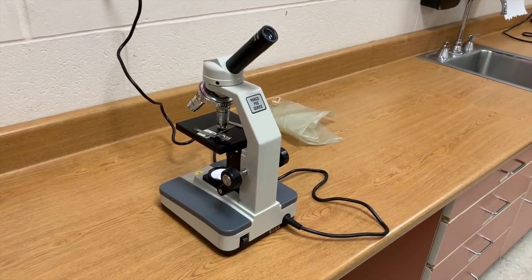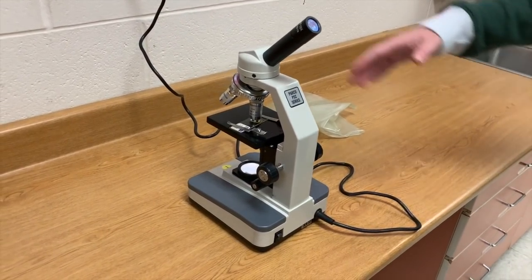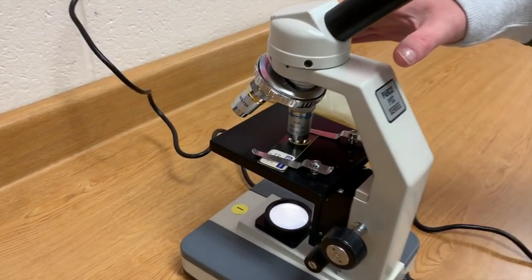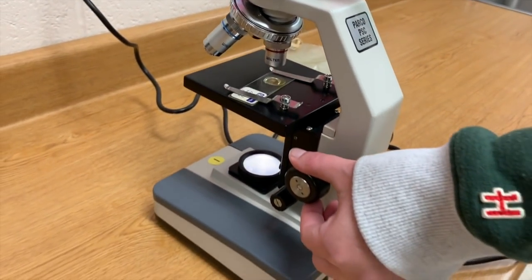After you have viewed your specimen on high power, we're going to clean up the microscope. First thing we need to do is move our objective to low power. Using the coarse adjuster, we're going to lower the stage completely, moving it away from you.